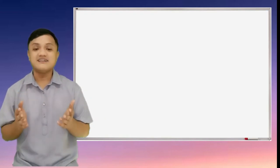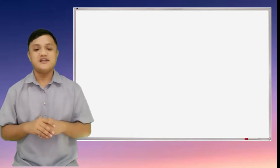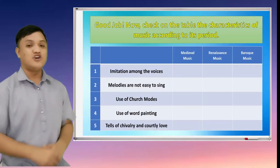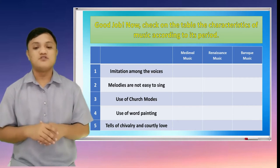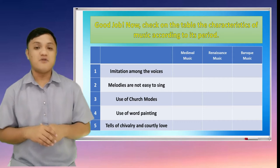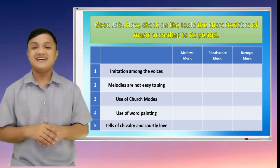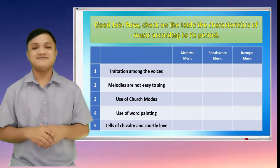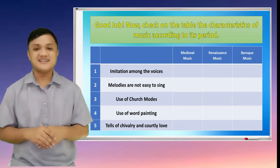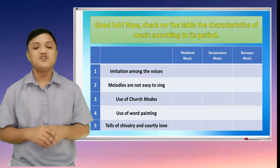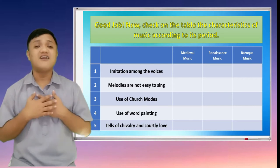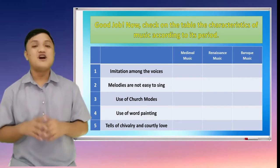Let us check on the table the characteristics of the music according to its period. Look at the table on your screen. You are just going to check if the statement is from Medieval, Renaissance, or Baroque music. Number 1. Imitation among the voices — is it from Medieval, Renaissance, or Baroque? Number 2. Melodies are not easy to sing. Number 3. Use of church modes. Number 4. Use of word painting. And number 5. Tells of chivalry and courtly love. Is it from medieval, renaissance, or baroque?